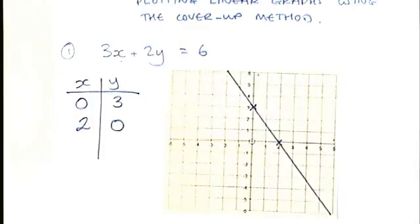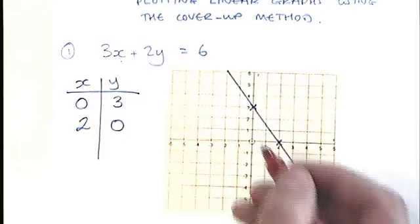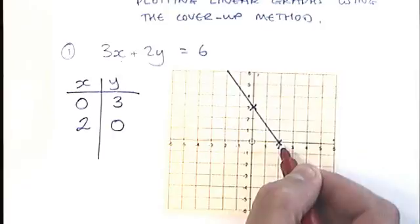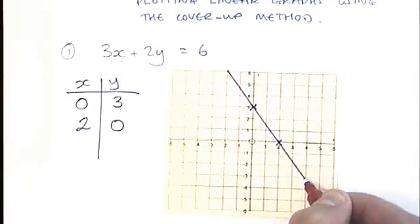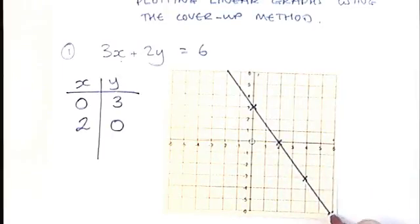Now you've got to be really careful at this point to try and make it as accurate as possible. Try to follow the pattern. If this is down 3 and along 2, then try and follow the same pattern. Down 3, along 2, down 3, along 2. You can see there I was a little bit inaccurate. Probably still get the mark, but you could be a bit more careful.